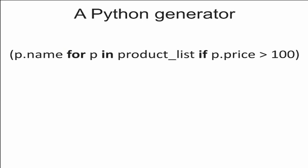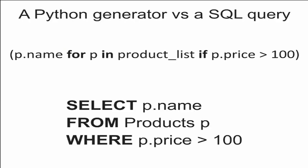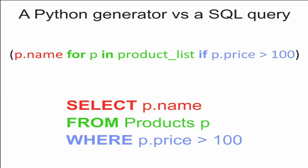Here is an example of a generator. We get the product names with a price over 100. And this is the same query expressed in SQL. As you can see, the generator looks similar to the SQL query. The select section is what goes to the resulting list. The from section is similar to the iterator section, and finally goes the condition. But this similarity is only in syntax — the behavior is completely different. A regular generator iterates over data stored in memory, while a SQL query selects data from the database.